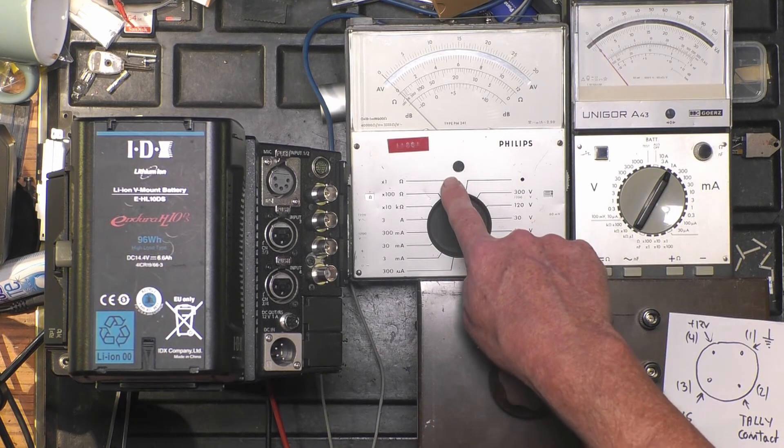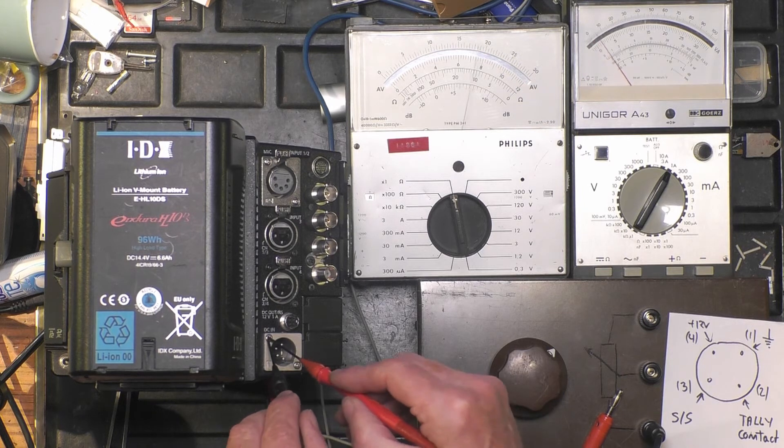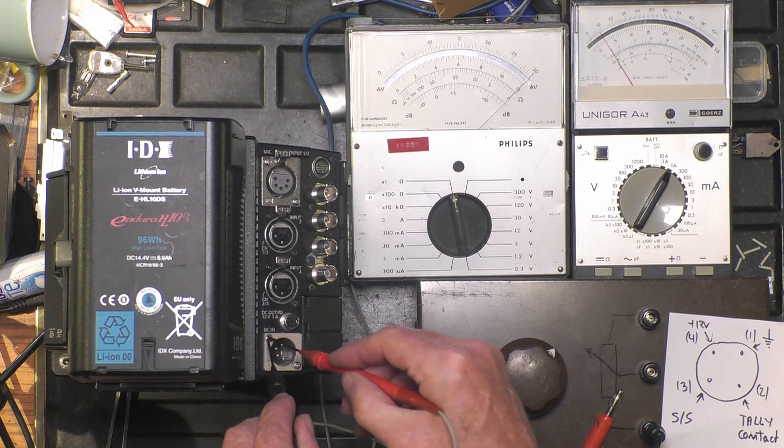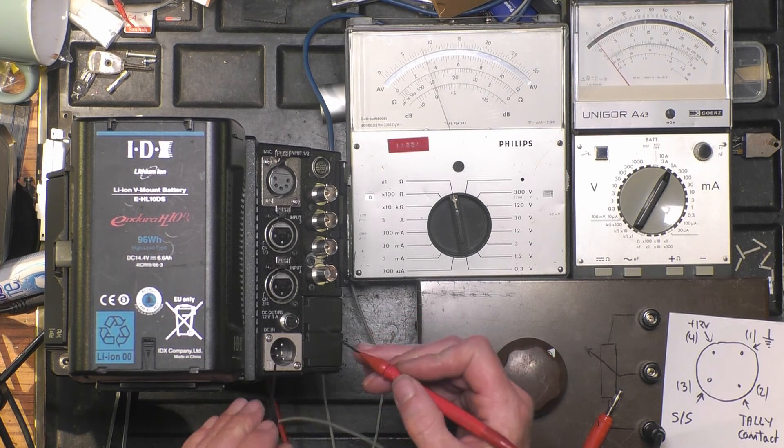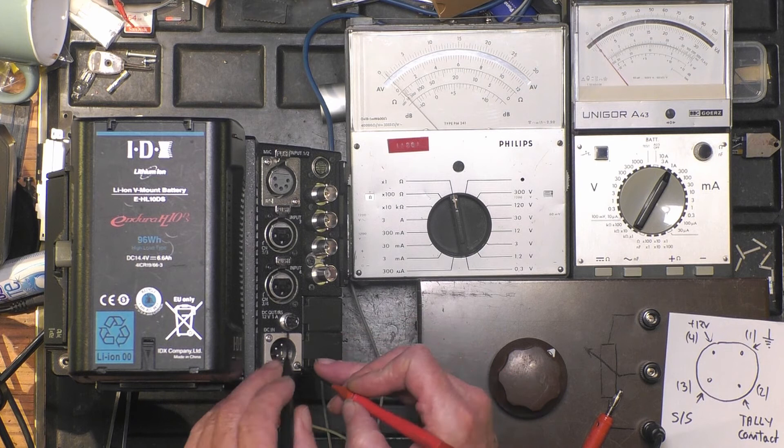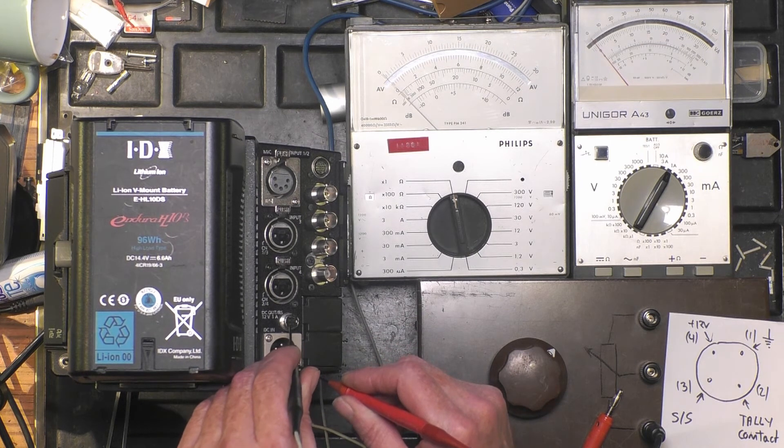I put my multimeter on ohms. It means if I make contact, the needle goes to zero. I'm just shorting the pins together. And now let's try on several pins. So no, I saw something but it is not connected.